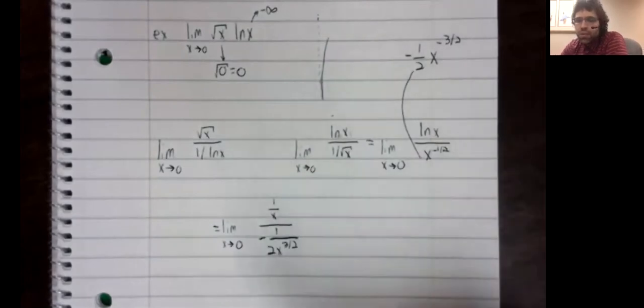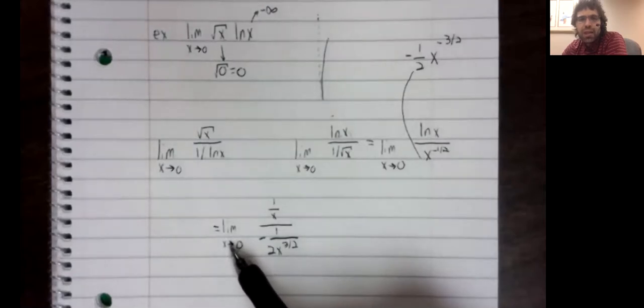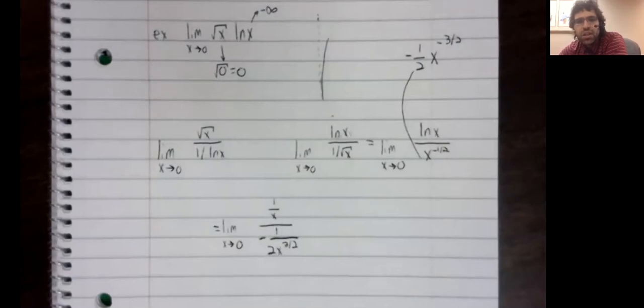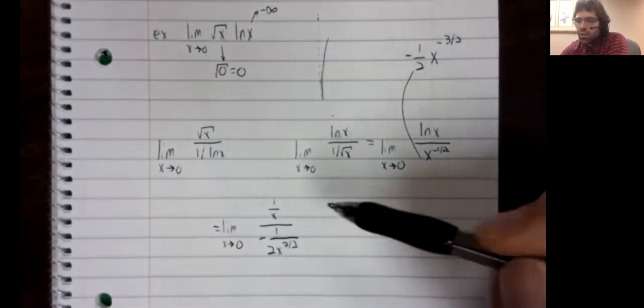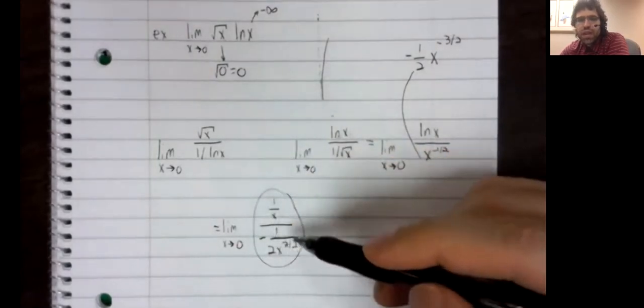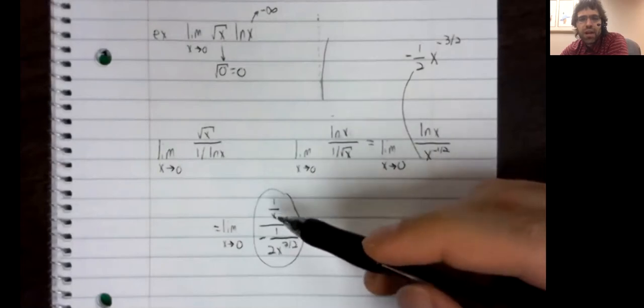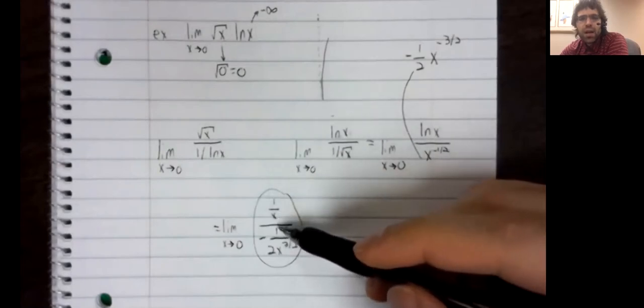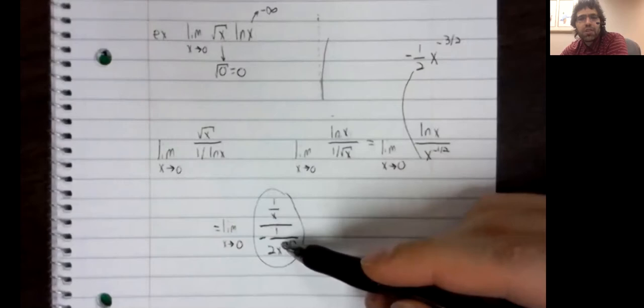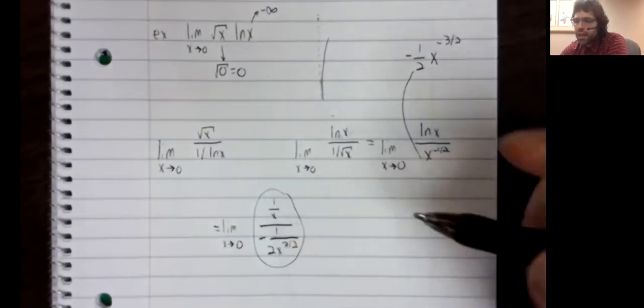Well, if you went ahead and tried to take the limit now using continuity, you'd get a division by zero error. But this big fraction can be simplified. We'll multiply top and bottom of this large fraction by the reciprocal of this small fraction.